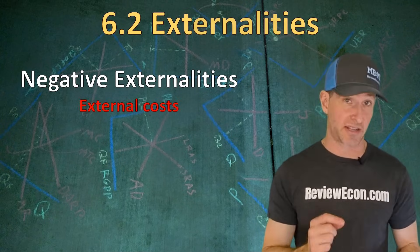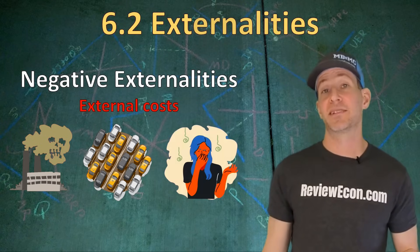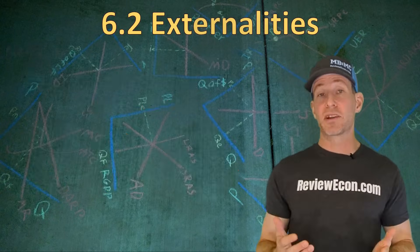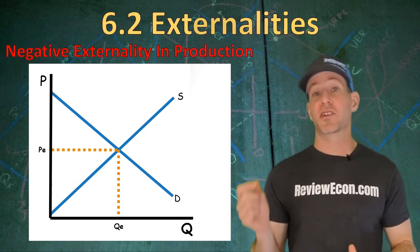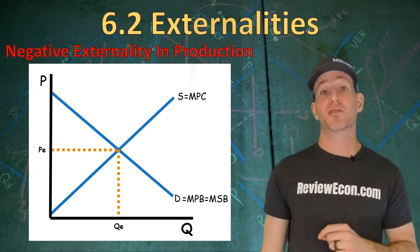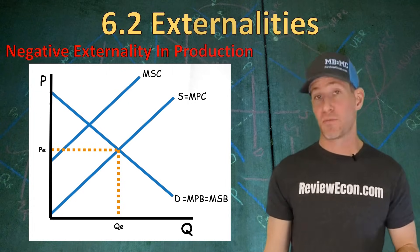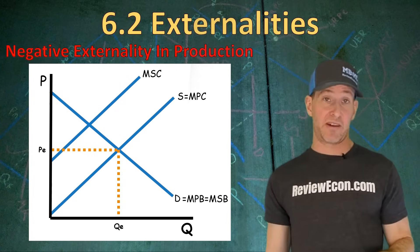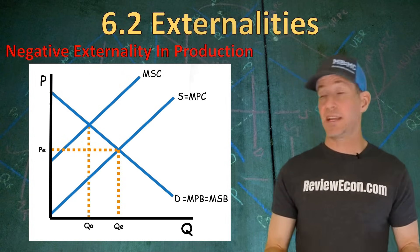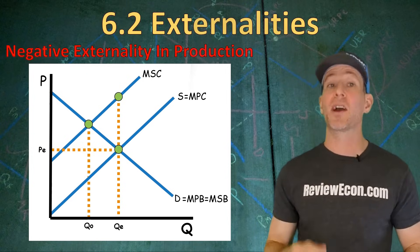A negative externality is when there's a spillover cost to people who don't buy or produce a product. Examples include factory pollution, traffic congestion, pollution from cars, and unpleasant smells emitted from a factory or household. To graph a negative externality in production, since the producers are creating the negative externality, the demand curve is our marginal private benefit and marginal social benefit curve, but the supply curve is only the marginal private cost curve. The external cost is added to that marginal private cost to give us a higher marginal social cost curve. QE is our market quantity without government intervention, but QO — where marginal social cost equals marginal social benefit — is the socially optimal or allocatively efficient quantity.